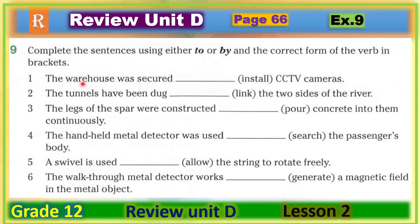Let's look at the first sentence: 'The warehouse was secured ___ installing CCTV cameras.' Are we going to say 'to install' or 'by installing'? The right answer is 'by installing.' Now take three or four minutes to complete the rest of the sentences, then play the video again to check your answers. Welcome back — let's check your answers.